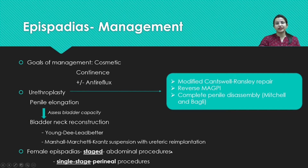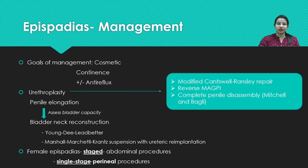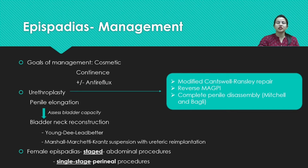When managing a case of epispadias, we must provide cosmetically acceptable genitalia that is continent and free of reflux. Initially, urethroplasty is performed to create the urethral tube, which can be done using modified Cantwell-Ransley repair, reverse MAGPI, or Marshall and Bagley's complete penile disassembly technique. These patients may also require penile elongation procedures. After initial procedures, bladder capacity is assessed; if adequate, bladder neck reconstruction is performed using Young-Dees-Leadbetter technique or various suspension procedures.